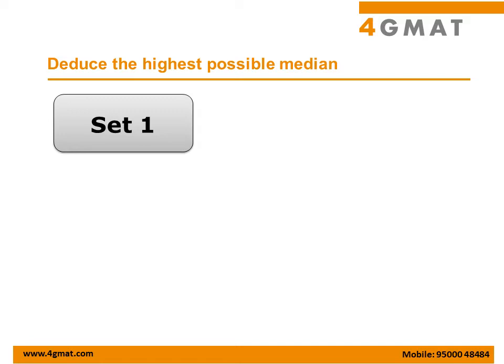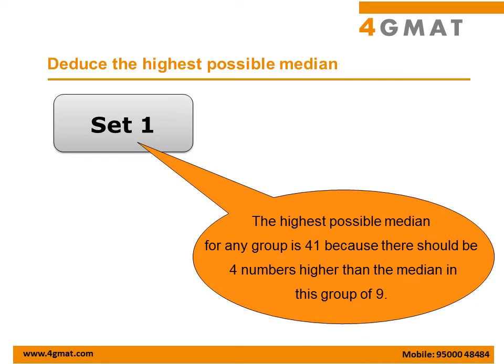So if we need to maximize this median, we need to make sure that the 5th, 6th, 7th, 8th, and 9th numbers of this set, when arranged in ascending order, take the highest possible values they can take. The 9th number is obviously 45. Counting down from 45, the 8th number will be 44, and so on. The 5th number of this set is going to be 41. So the median for the set comprising the largest median is going to be 41.